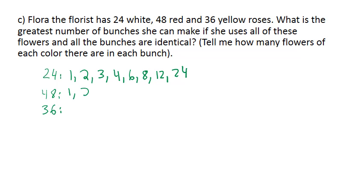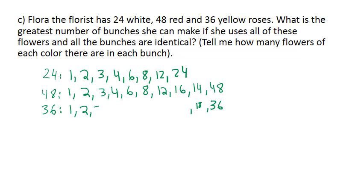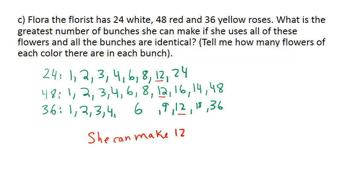For 48: 1, 2, 3, 4, 6 — 6 times 8, 4 times 12, 3 times 16, 2 times 24, and 1 times 48. For 36: 1 times 36, 2 times 18, 3 times 12, 4 times 9, and 6 times 6, so I write 6 only one time. I have a lot of common divisors; the greatest common divisor is 12. So she can make a maximum of 12 bunches.